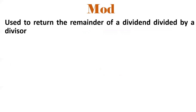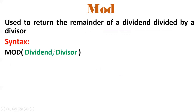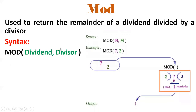Next, MOD functionality. It is used to return the remainder of a dividend divided by a divisor. The syntax is MOD(dividend, divisor). For example, MOD(7, 2): 7 divided by 2 gives remainder 1. So MOD(7, 2) = 1. MOD functionality gives the remainder of any number division.